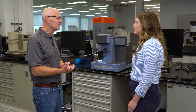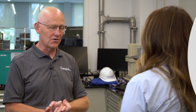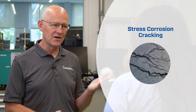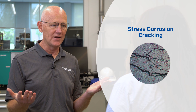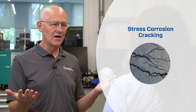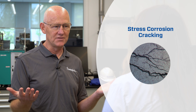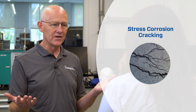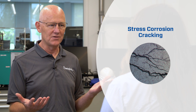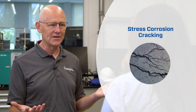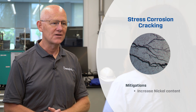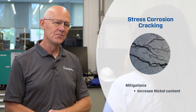Another type of corrosion that's common is chloride stress corrosion cracking. If you have a component that's under stress and exposed to a chloride-rich environment or dissolved salt in seawater, the combination of the stress and the chloride will attack the material and cause cracking. The mitigation for this is to increase the nickel content in the material.